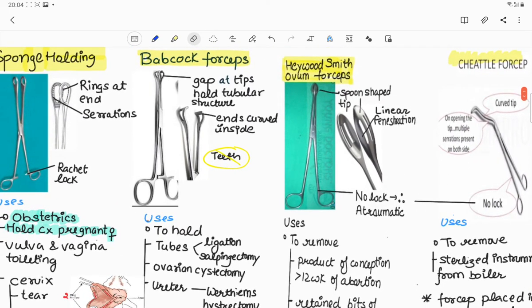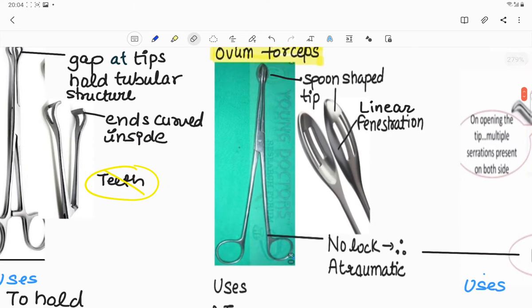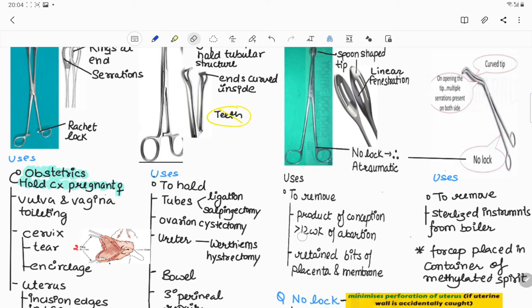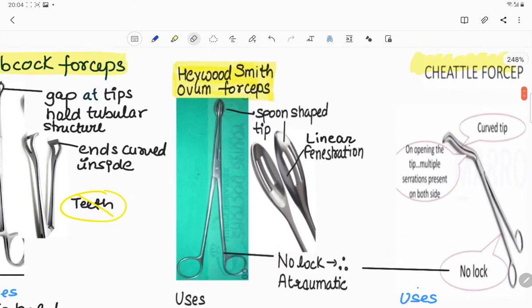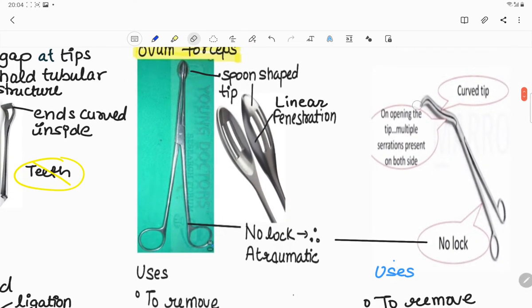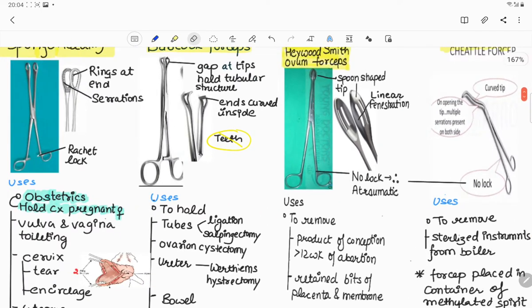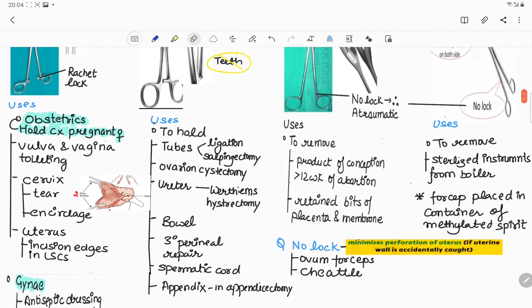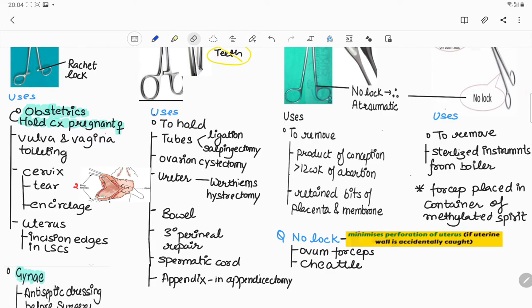There are two forceps which don't contain any lock. Number one is Haywood Smith ovum forceps. It has a spoon-shaped tip with linear fenestrations and doesn't contain any lock, therefore it is atraumatic. Uses of ovum forceps are to remove the products of conception for more than 12 weeks of abortion or in second trimester abortion to remove retained bits of placenta and membrane. Second forceps is Cheatle forceps which doesn't have any lock. It has a curved tip and on opening the tip, multiple serrations are present on both sides. It is used to remove sterilized instruments from the boiler. So two forceps that don't contain any lock are ovum forceps and Cheatle forceps.